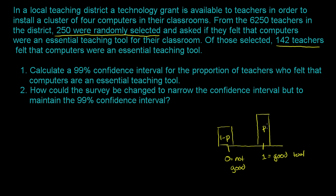We have a Bernoulli distribution right here. The mean of this distribution, or the expected value, is actually going to be p. So it's a value that's neither 0 nor 1 — not an actual value you could get from a teacher. They cannot say something in between good and not good, but the actual expected value is something in between: it is p.